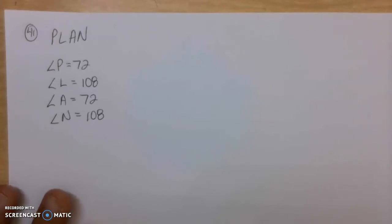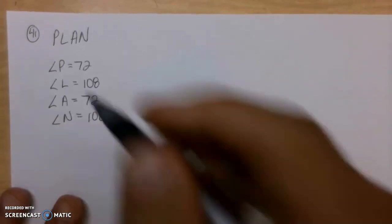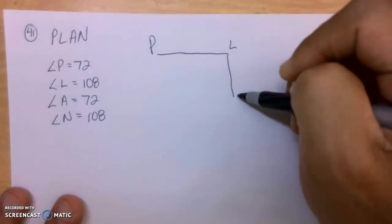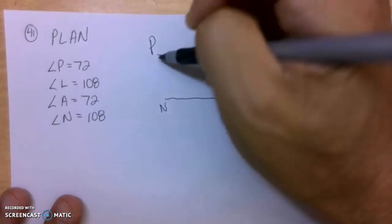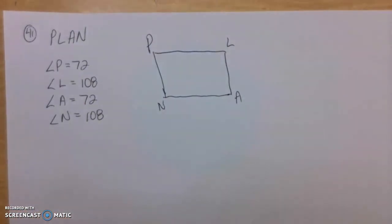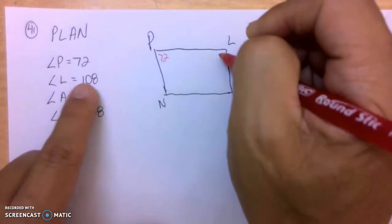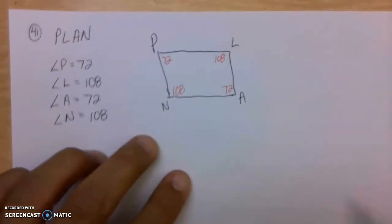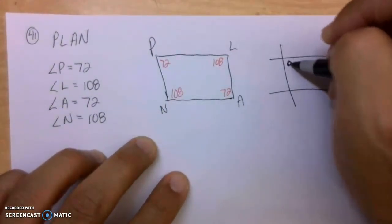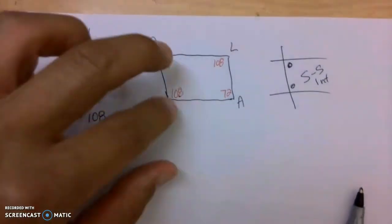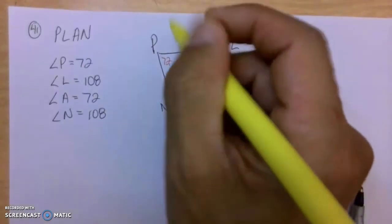Problems 41 through 44. The directions say which sides of the quadrilateral PLAN must be parallel. PLAN — that's pretty much the way you're going to go: P, then L, then A, then N. You don't just scramble those any way you feel like it — P to L to A to N. Let's put the numbers in this picture: this is 72 degrees, this is 108, this is 72 degrees, this is 108. If you've got two lines and these two angles, 72 and 108, add up to 180, that's same side interior angles. Since that does add up to 180, that forces these lines to be parallel.